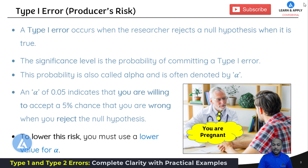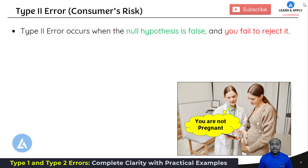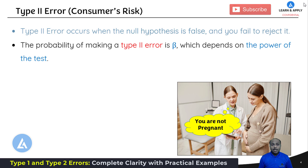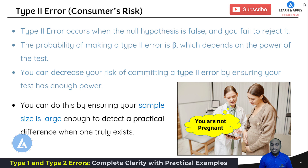Now let's understand type 2 error. Type 2 error is also called consumer risk. Type 2 error occurs when the null hypothesis is false and you fail to reject it. In this picture we can see there is a pregnant woman but the doctor is saying she is not pregnant — that is the type 2 error. The probability of making a type 2 error is beta, which depends on the power of test. You can decrease your risk of committing a type 2 error by ensuring your test has enough power, and you can do that by increasing your sample size — ensuring your sample size is large enough to detect a practical difference when one truly exists.